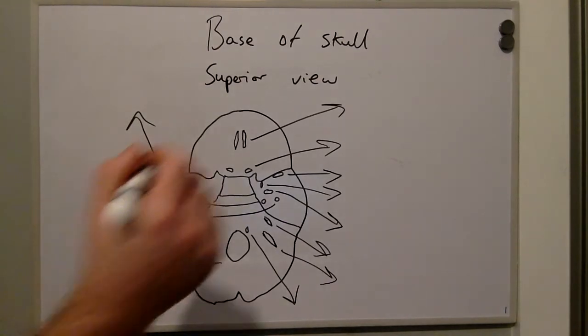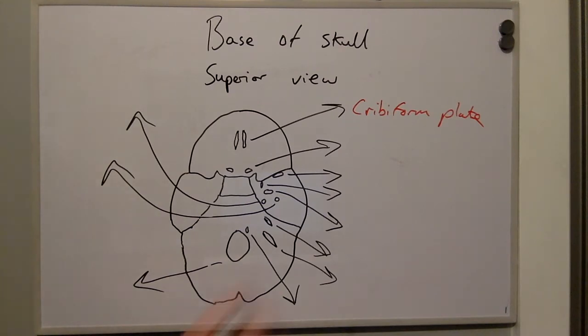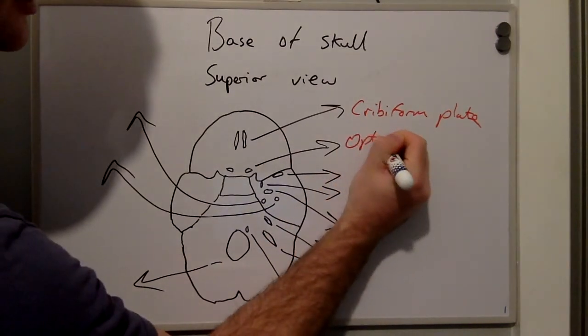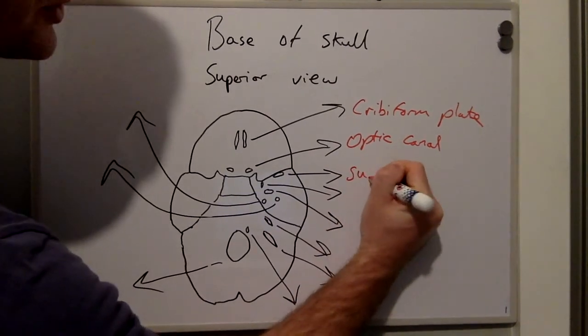At the top here we have the cribriform plate. Below this we have the optic canal. Lateral to the optic canal we have the superior orbital fissure.